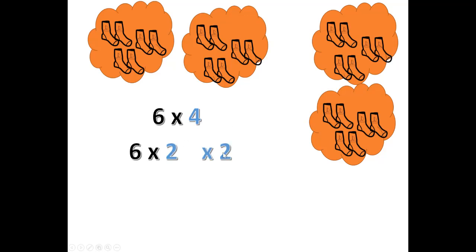So the 4 is replaced with 2 times 2. And now 6 times 2 is 12. I don't have to worry about that. Then I'll bring that down. And now 12 times 2. How to double that. It's 24.